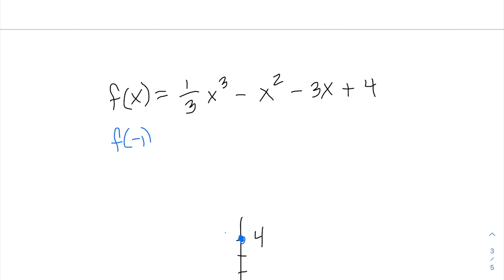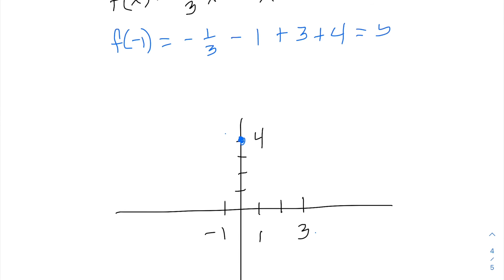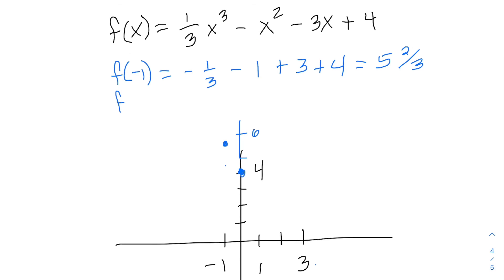So f(negative 1) equals negative one-third minus 1 plus 3 plus 4, which gives us 6 minus one-third, or 5 and two-thirds. So our local max at x equals negative 1 has a y-value of 5 and two-thirds. For our local min, we find f(3): that's 27 over 3, which is 9, minus 9, minus 9, plus 4. Those cancel and we get negative 5.